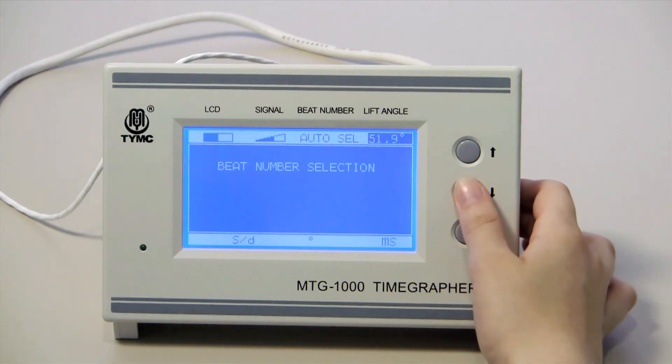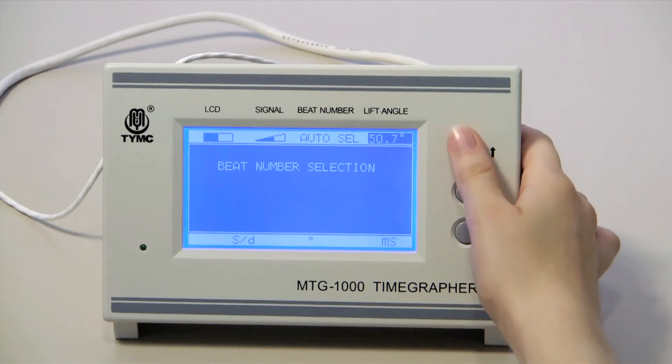To get the most accurate amplitude measurement possible, you can manually set the lift angle. If you don't know what the lift angle should be, the tester is preset to a value of 52 degrees.